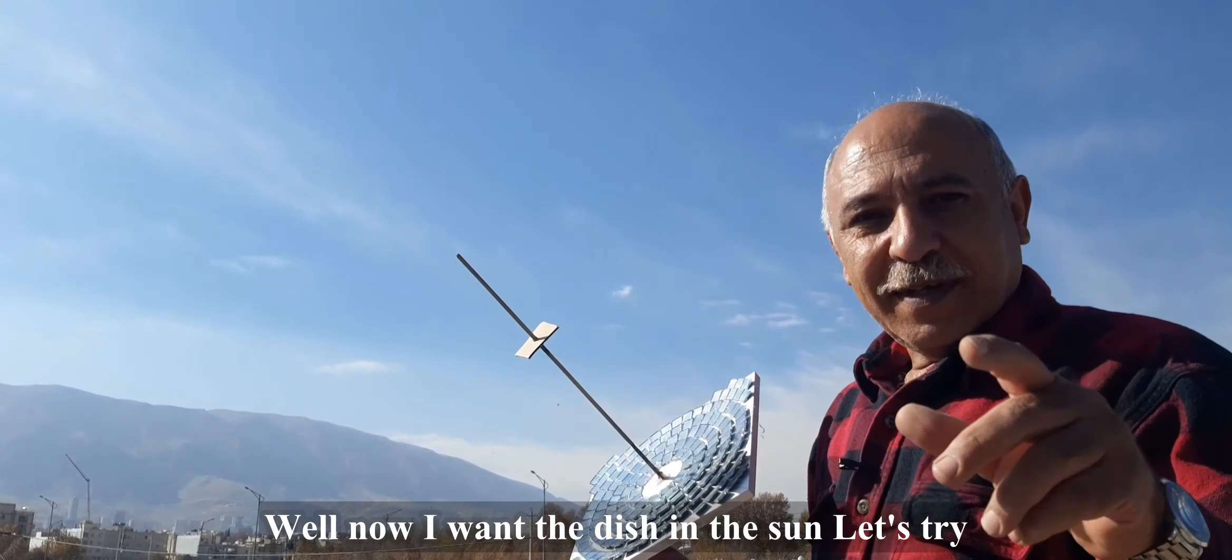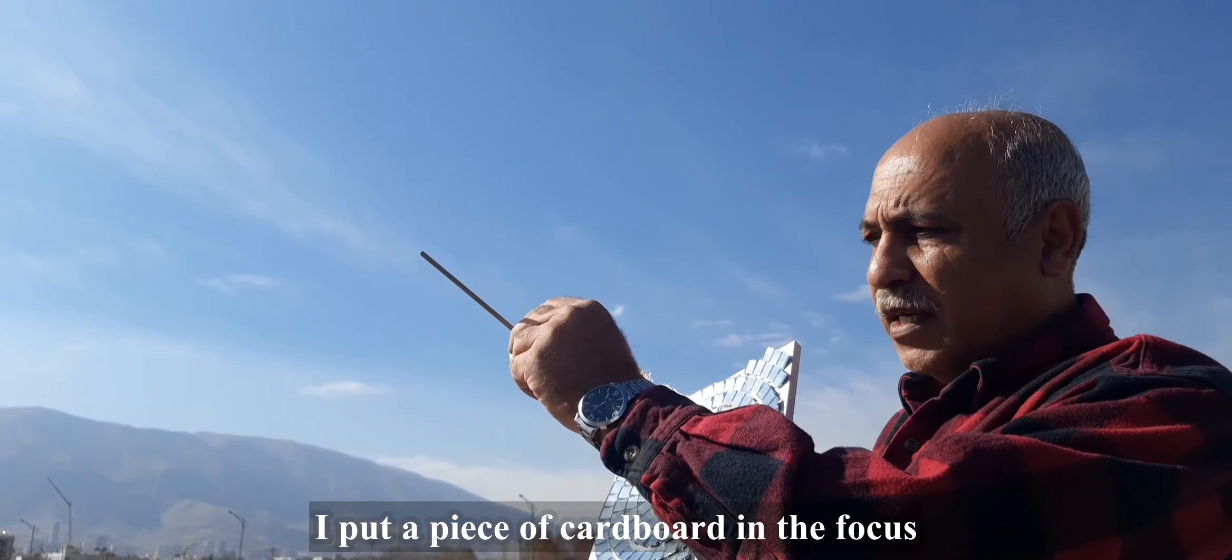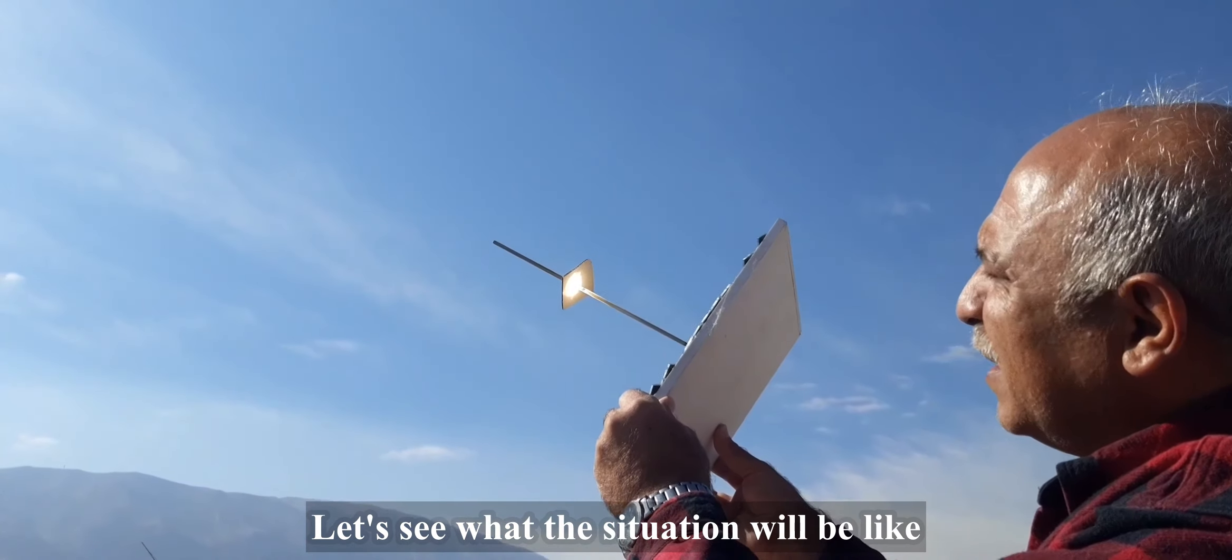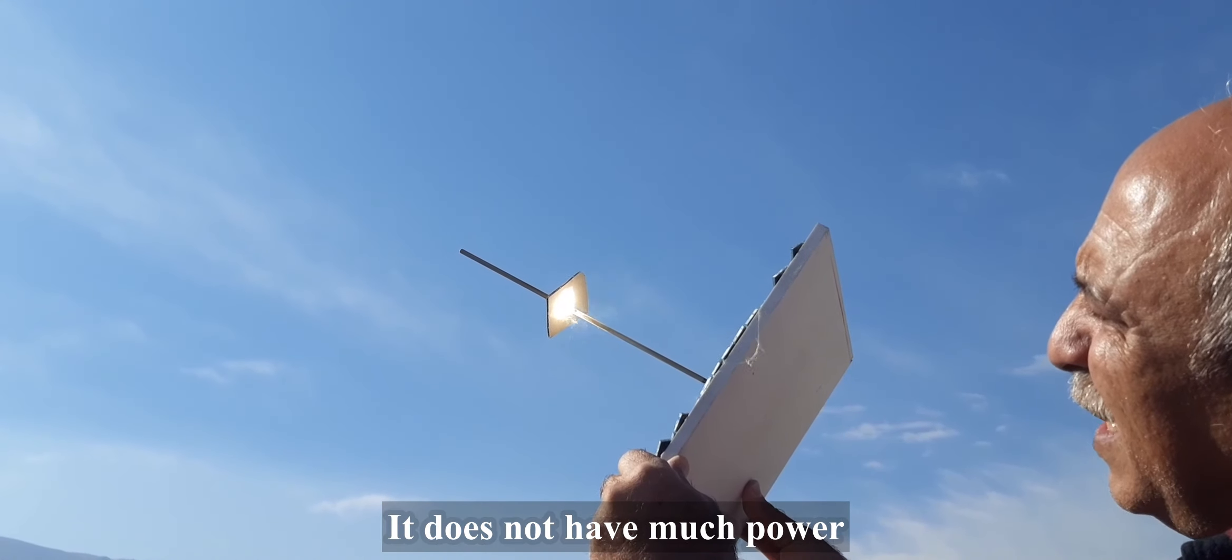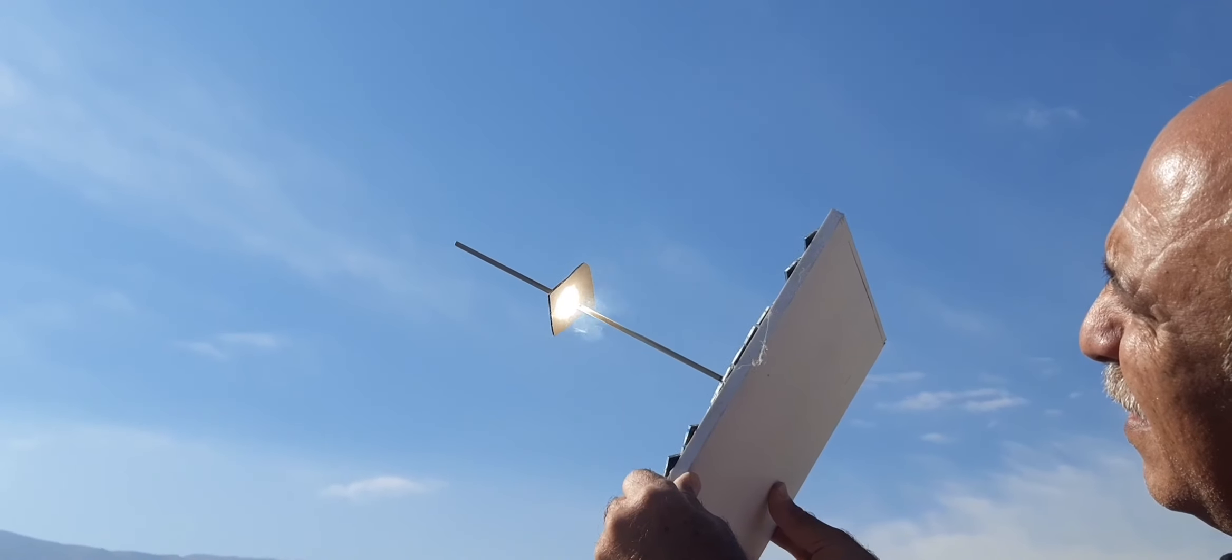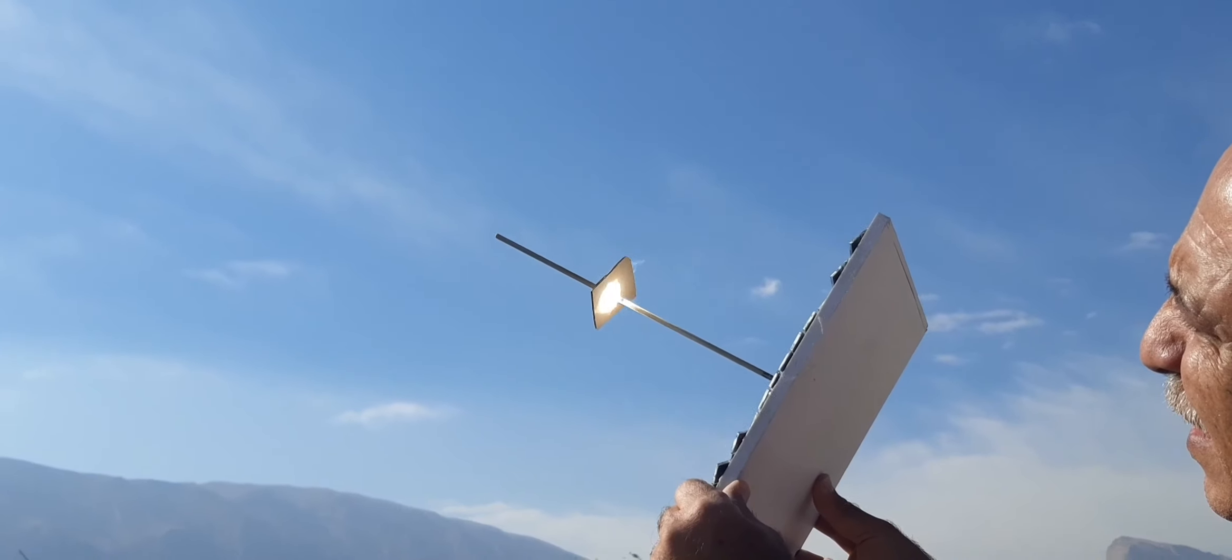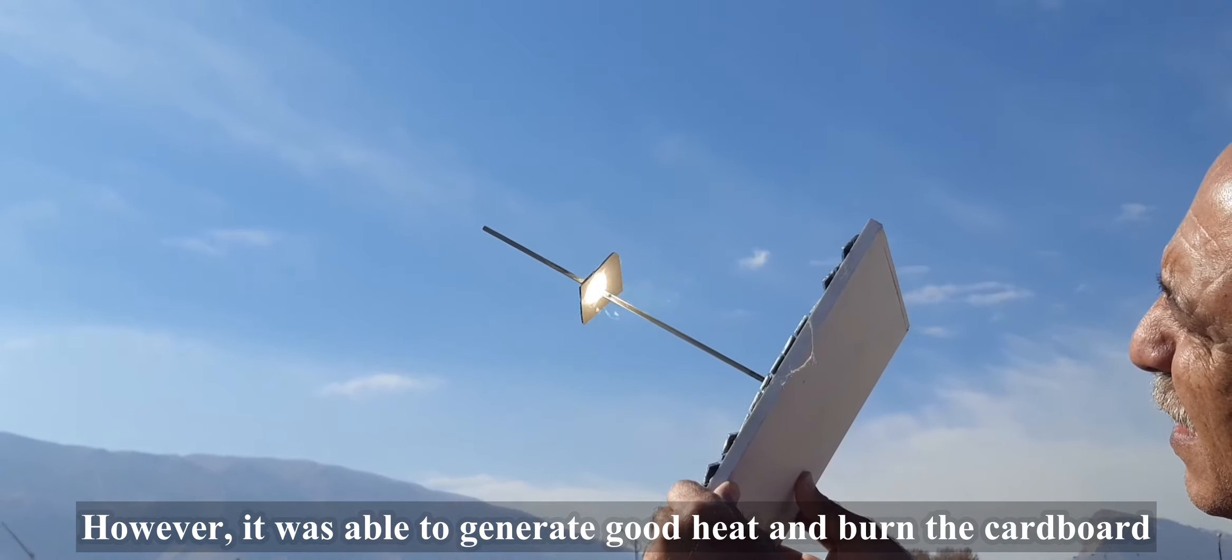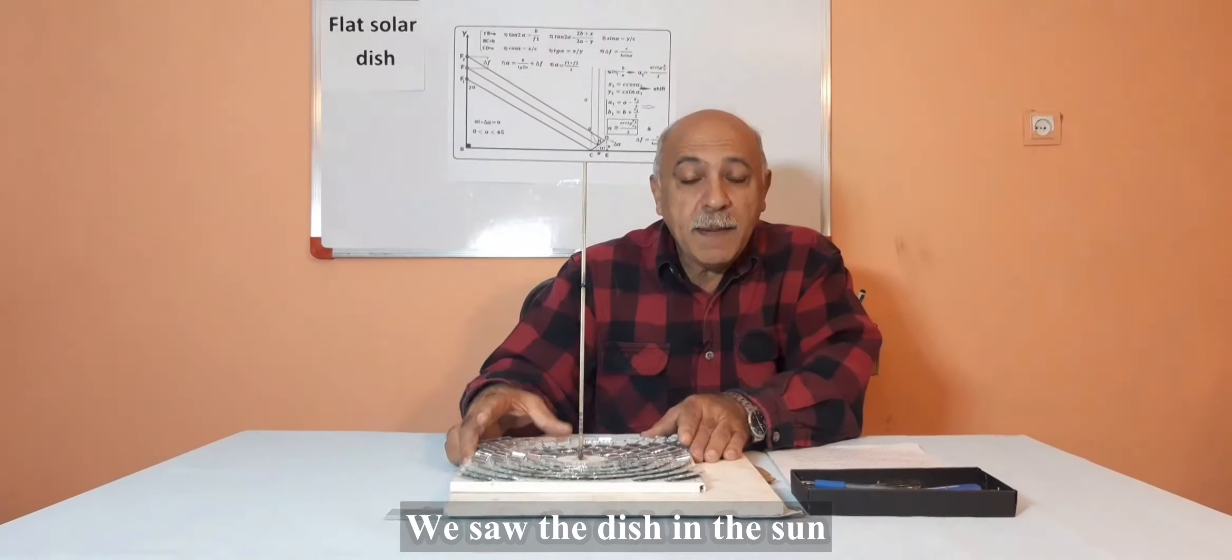Now let's test the dish in the sun. I put a piece of cardboard in the focus. Because the dish is small and the sun is on the horizon, it does not have much power and the wind does not allow the cardboard to heat up. However, it was able to generate good heat and burn the cardboard.